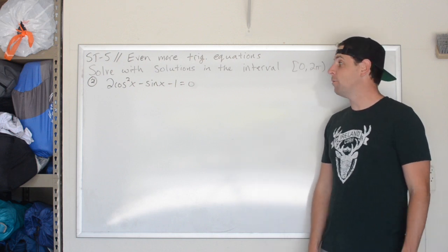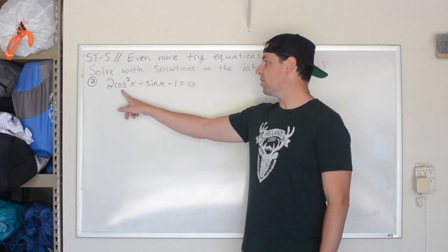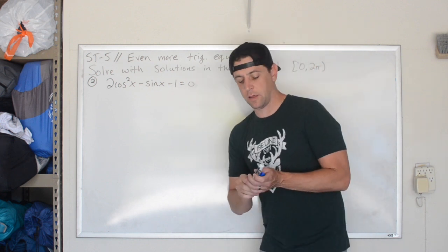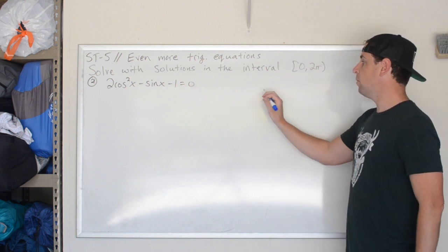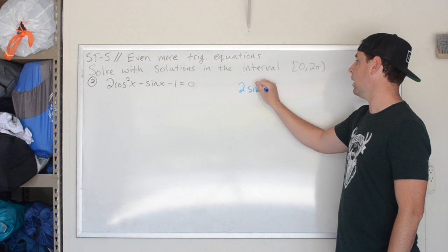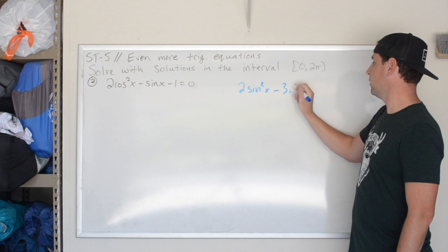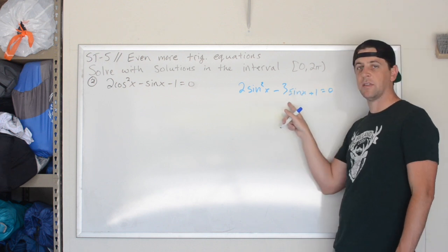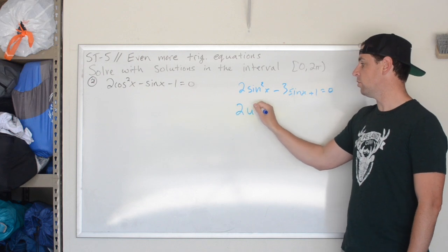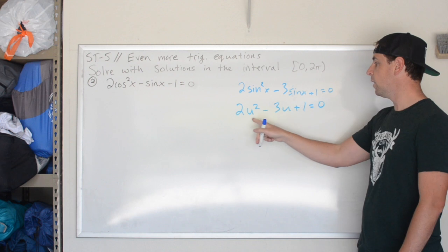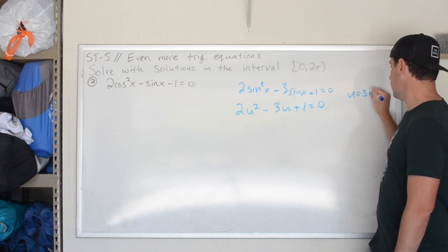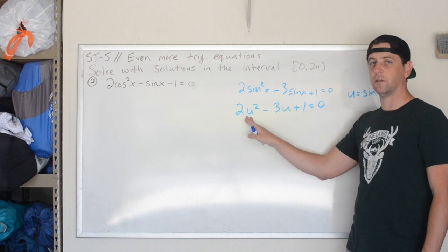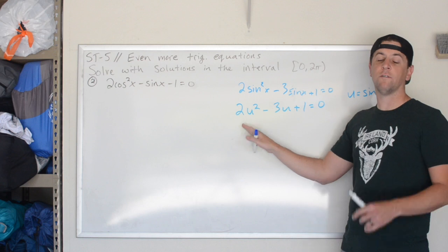We're on to problem number 2. The equation is 2 cosine squared x minus sine of x minus 1 equals 0. This should remind you of a previous problem where we had something like 2 sine squared x minus 3 sine of x plus 1 equals 0, where we used u substitution to write it as 2u squared minus 3u plus 1 equals 0 by letting u equal sine of x. That let us use our factoring skills to solve it.